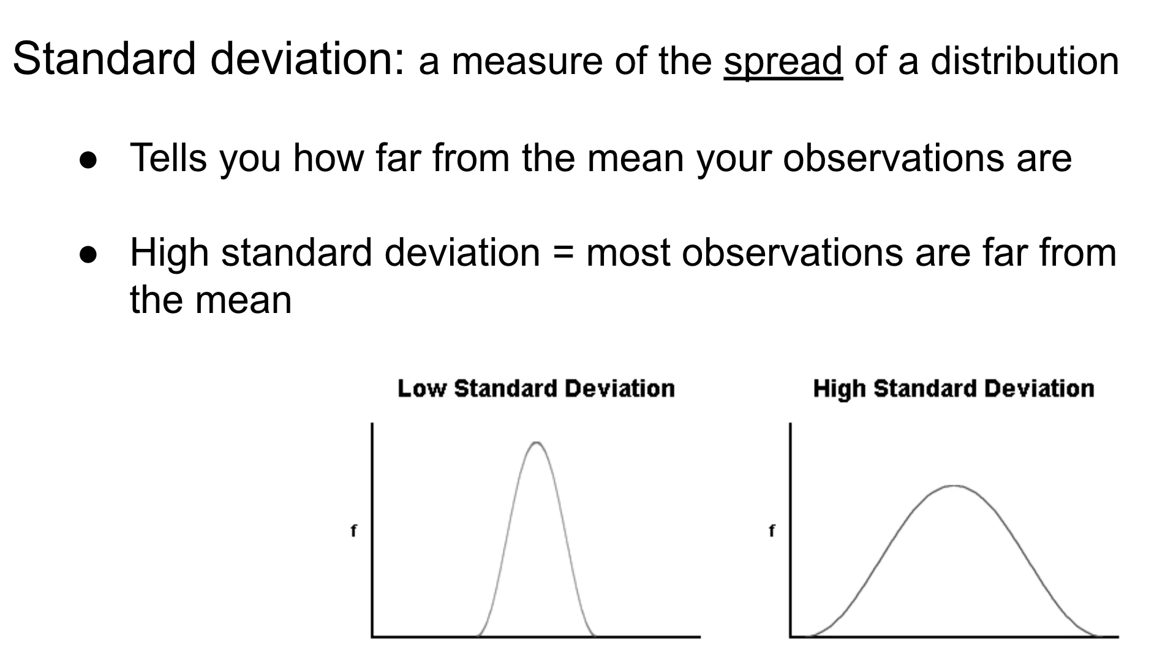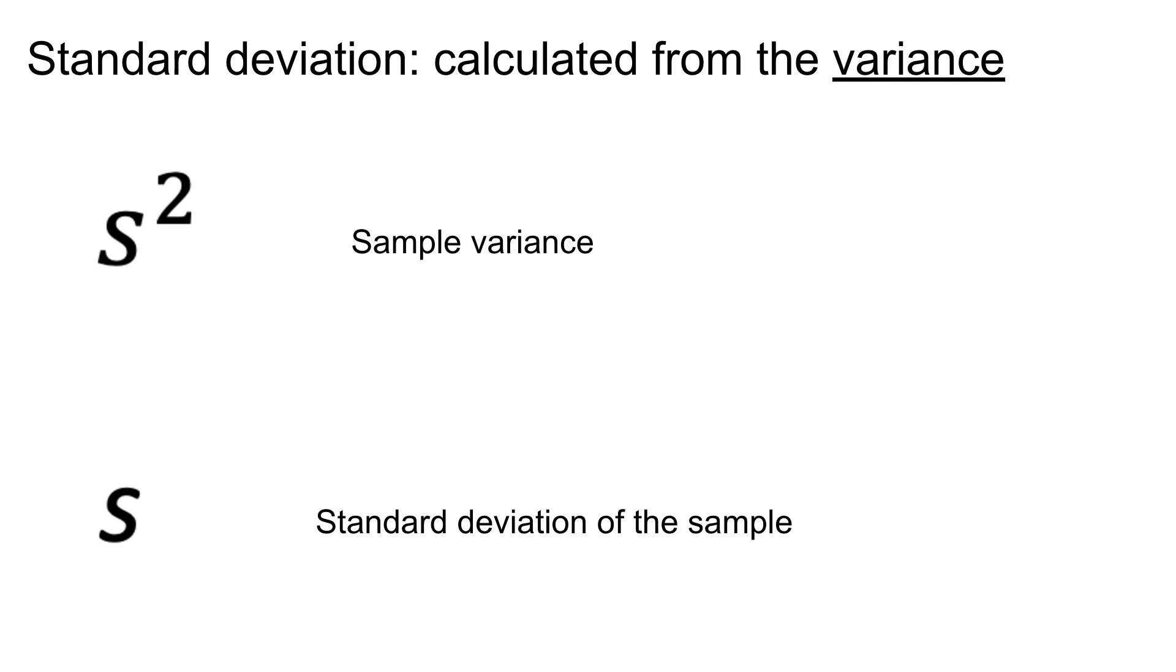Standard deviation on the other hand is a measure of the spread of our data. And it basically tells us how far from the mean our observations tend to be. And you can see in these examples here what a high standard deviation versus a low standard deviation looks like. You can see in the high standard deviation most of the spread of our data is away from that mean.